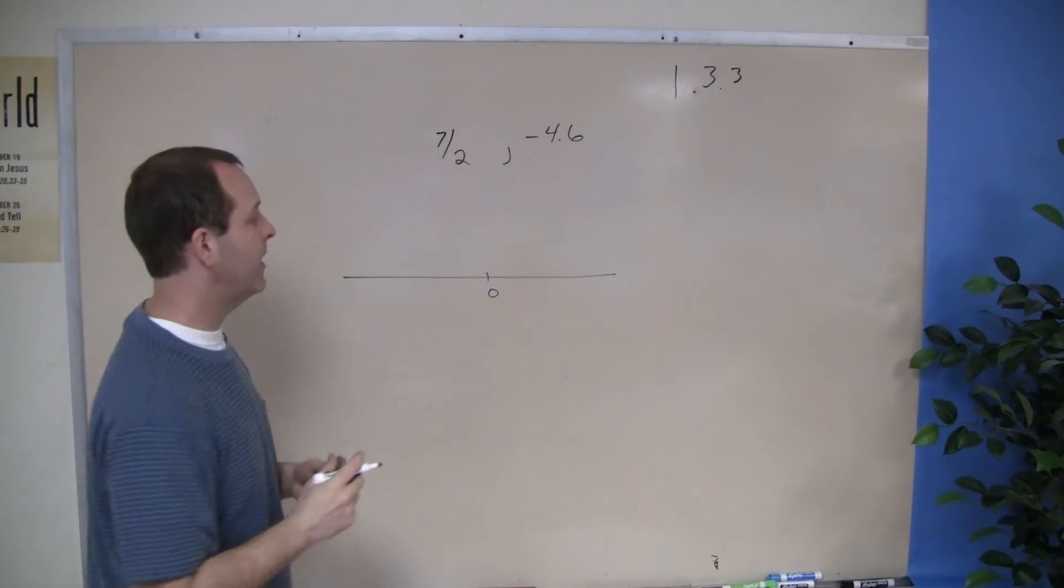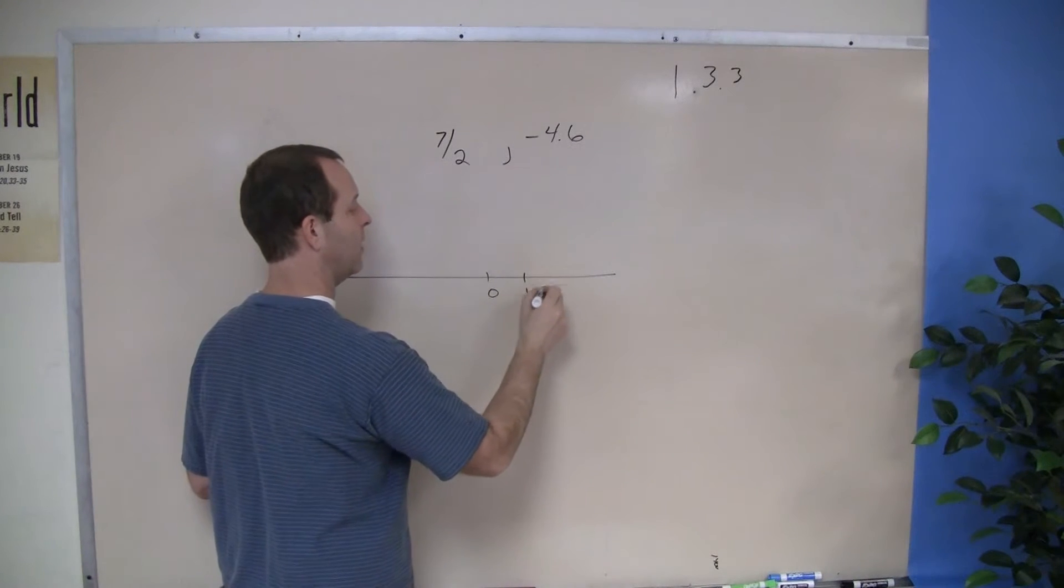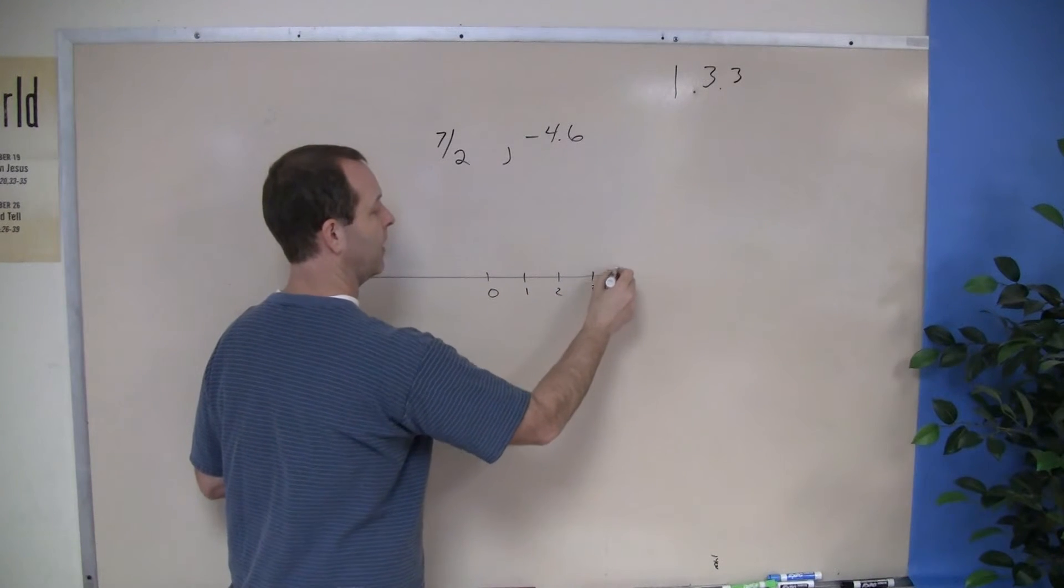So I can just start drawing a number line. Let me put some markers on there: 1, 2, 3, 4.